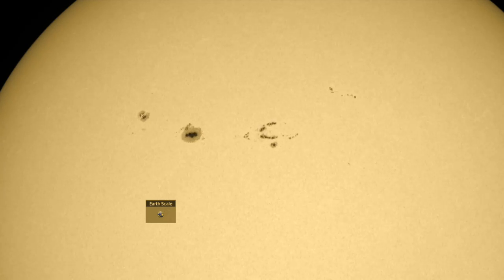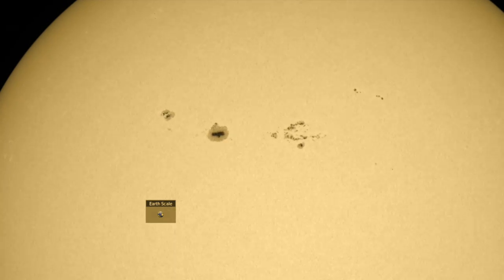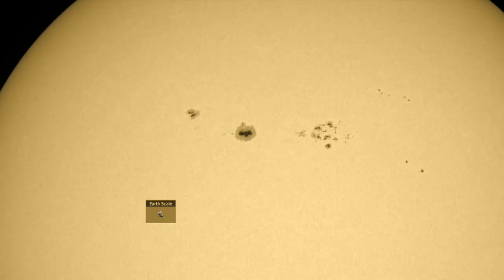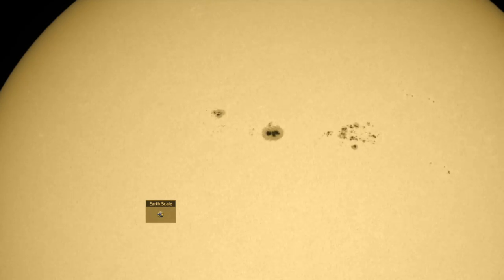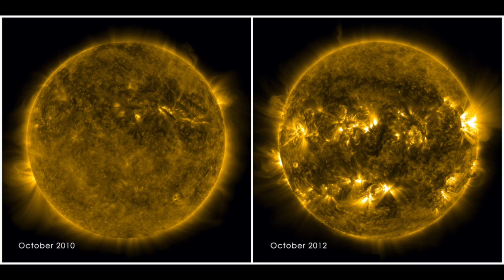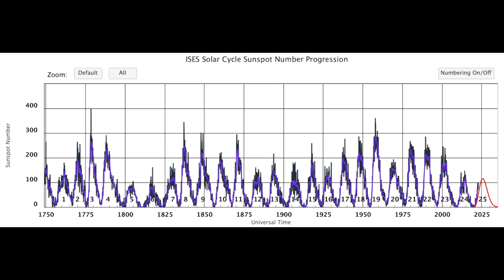Sunspots can be tiny, up to bigger than Jupiter, and there are often many in one location. Their appearance runs on an 11-year cycle — sunspot maximum and sunspot minimum. Virtually no sunspots appear during the minimum, while lots appear during the maximum phase. How many appear during the maximum always varies, as seen in the amplitude variability over the last few centuries of observations, but the 11-year cycle — the wavelength of the pattern — does not change.